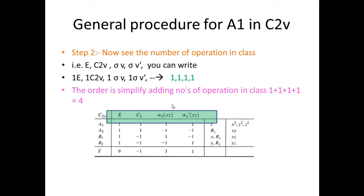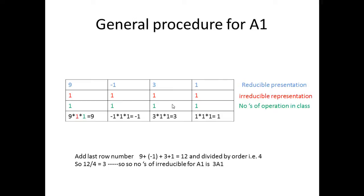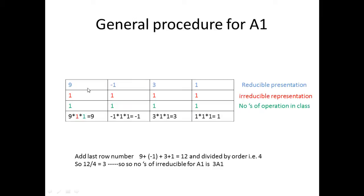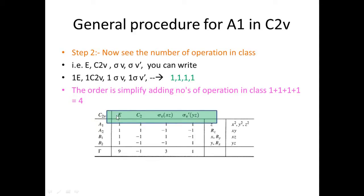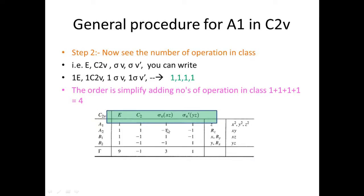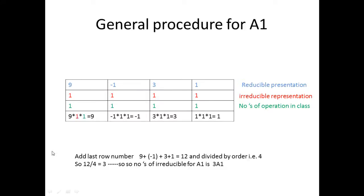The order is a useful quantity in reducible representation decomposition. The procedure for A1 is a simple multiplication calculation. We write the reducible representation to be decomposed, and corresponding A1 irreducible values of 1, 1, 1, 1. The number of operations in each class is 1, 1, 1, 1. We multiply and add everything together to get 12, then divide by the order 4, which equals 3. So the number of times A1 appears is 3A1.